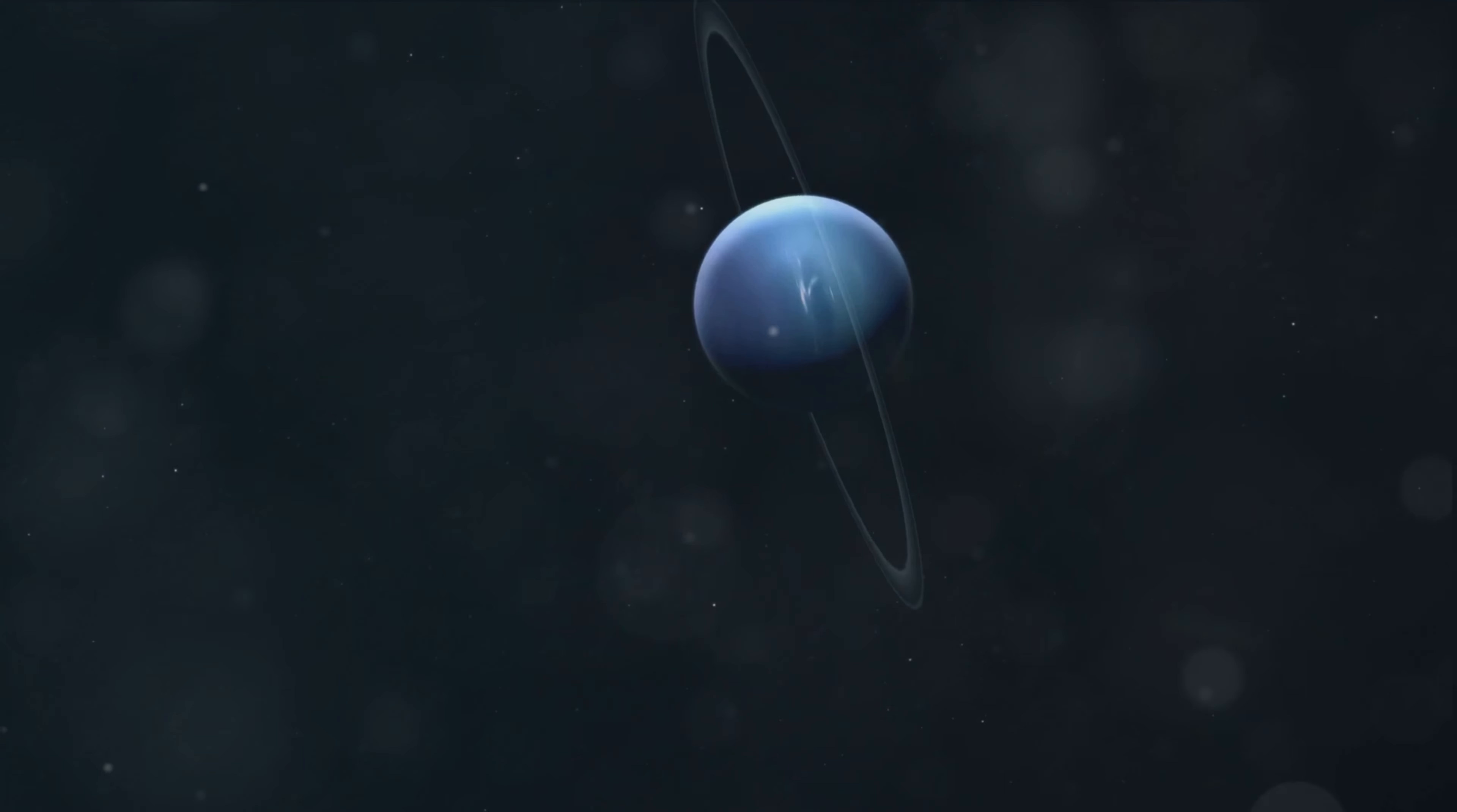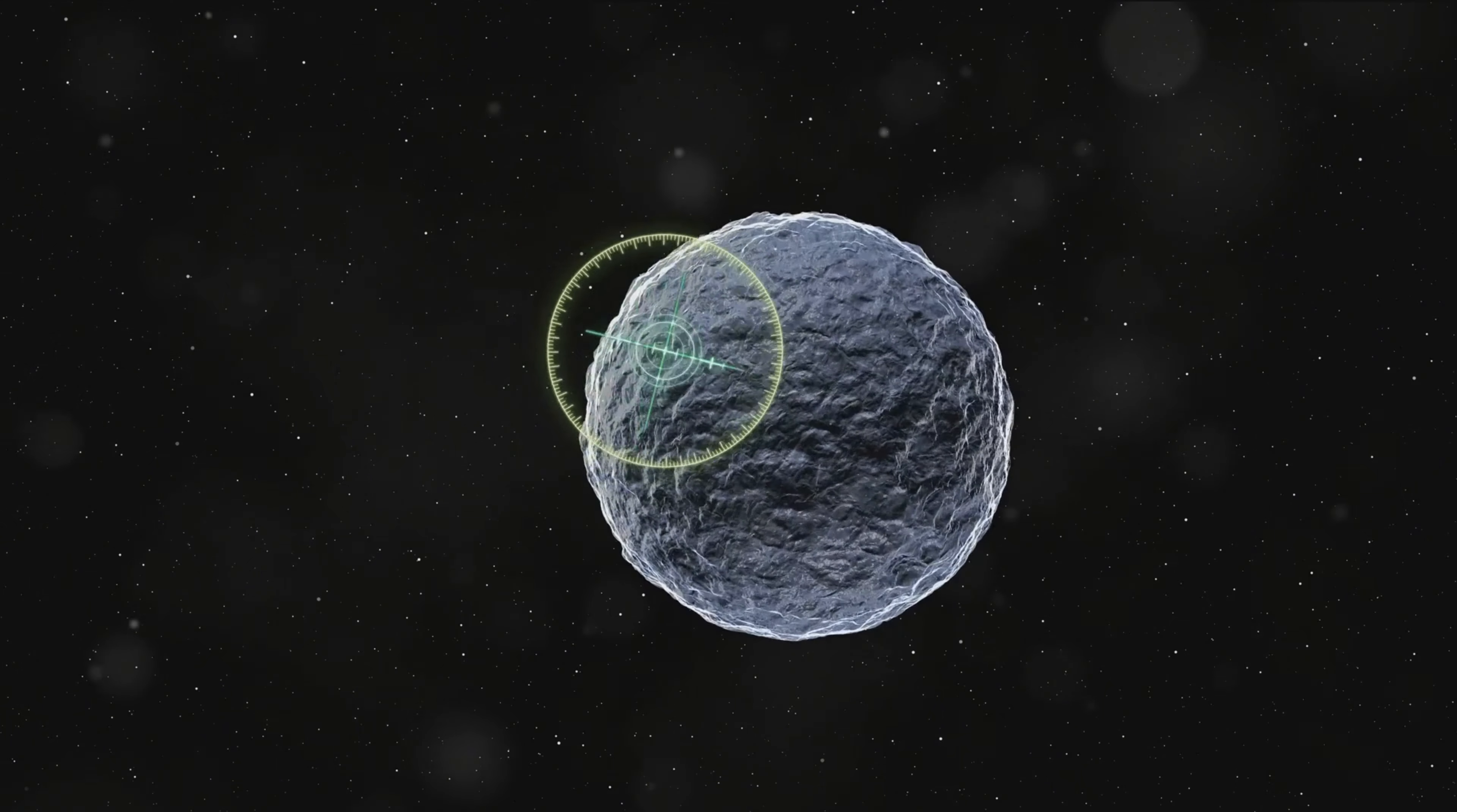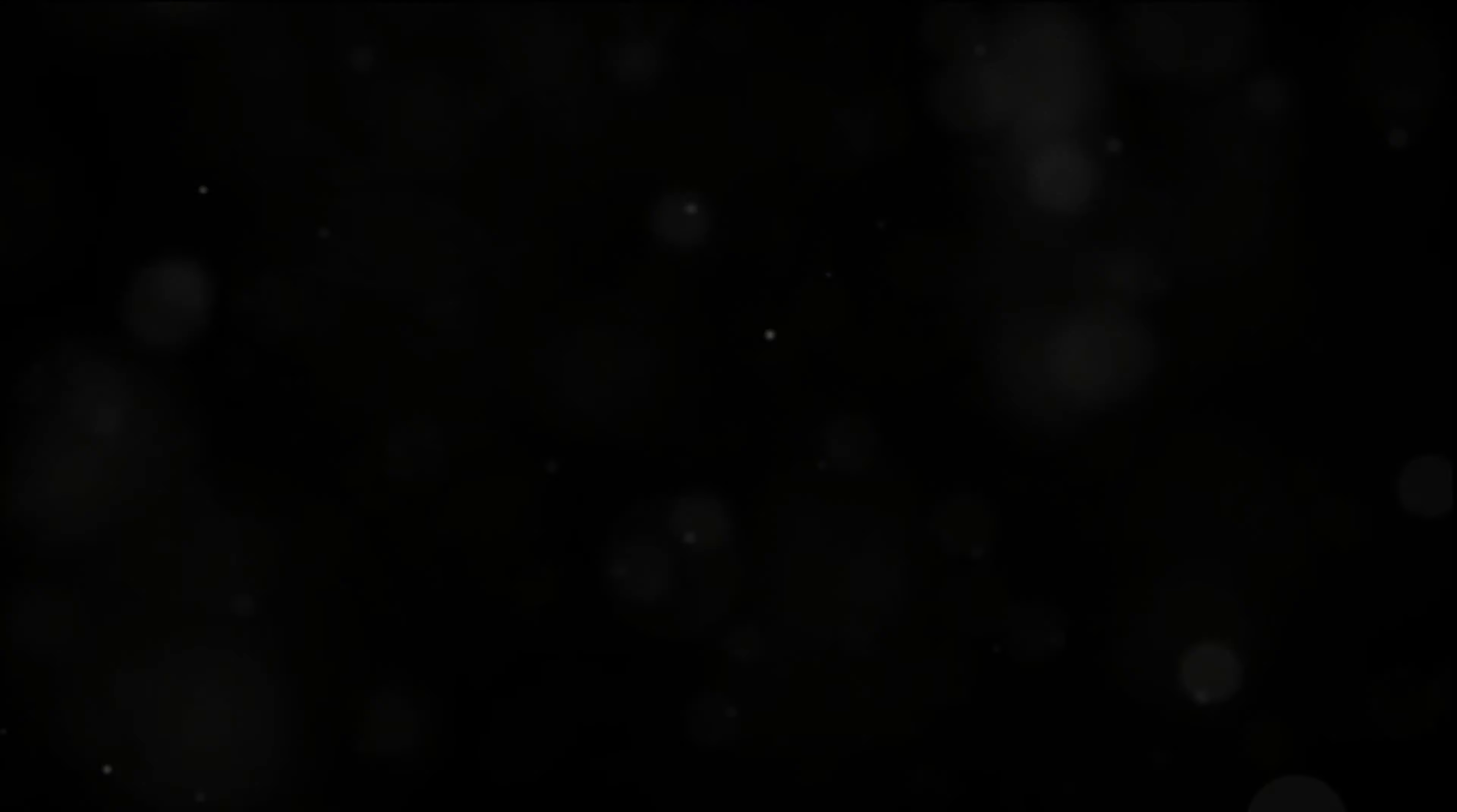This indirect detection method mirrors how Neptune was discovered and underscores the subtle power of gravitational influence in celestial mechanics. The idea that something so large remains hidden in our solar system presents a fascinating puzzle and has revitalized interest in planetary science.